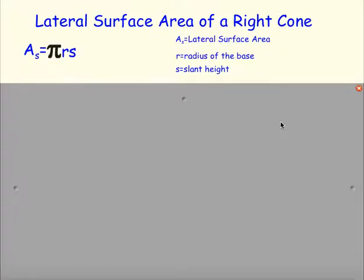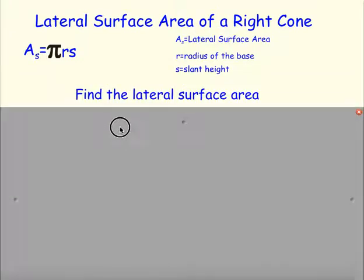Now when we think about the lateral surface area of a right cone, we have a new formula. The lateral surface area is pi times the radius times the slant height. So instead of doing perimeter times slant height divided by 2, the lateral surface area of a right cone is πrs — pi times radius times slant height.